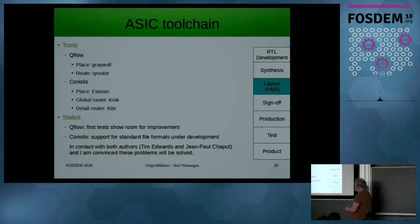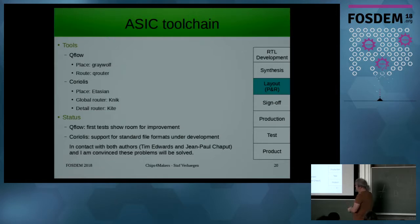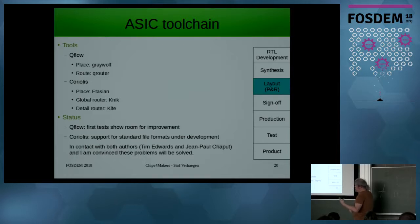For layout, you have Qflow with GrayWolf and Qrouter, and then there's Coriolis, developed at the University of Paris, with three tools there. I had my cores, synthesized them, and put them through the tools. I see there is still room for improvement, but I'm in contact with both authors of these tools and I'm convinced it's not a bottleneck — they're very nice people and it's just because I'm using a new technology node that they haven't set up before.